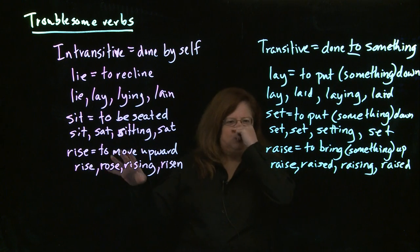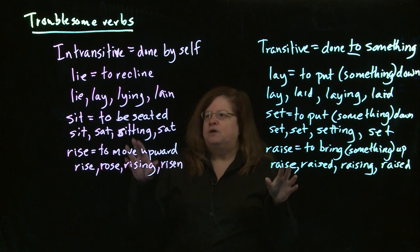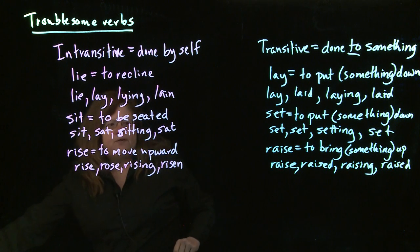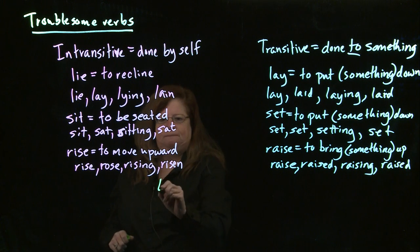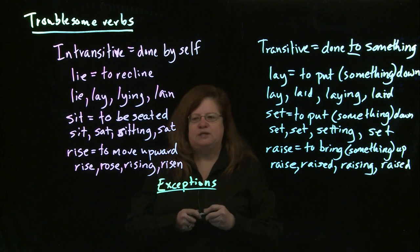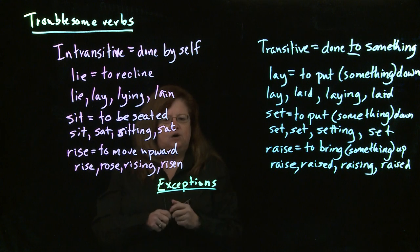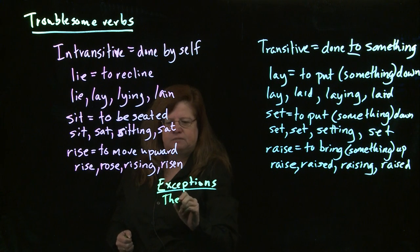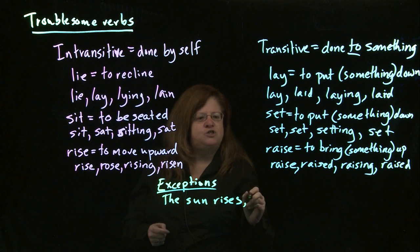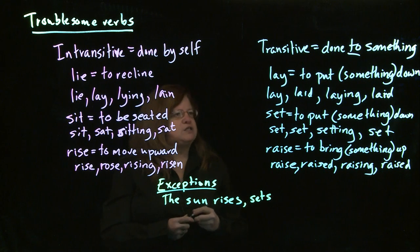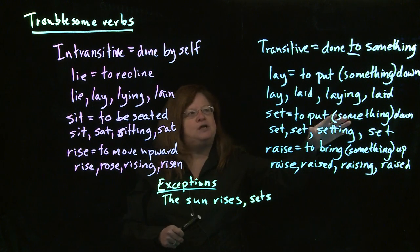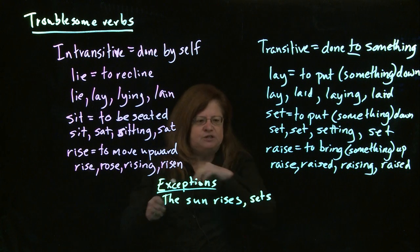So these are the main troublesome verbs to think about. Keep asking yourself: are you doing it to something, or are you doing it by yourself? There are a few exceptions — not very many — where things that normally would be transitive are intransitive, or vice versa. For example, we say the sun rises — it's not doing anything to something — that's intransitive as usual. But it also sets, and set is normally transitive. In this case, it's intransitive — the sun is setting.